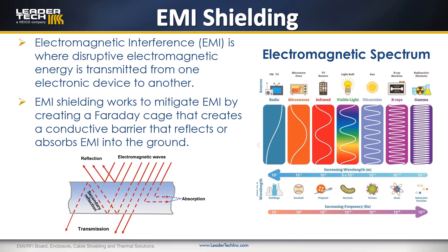If you look at the chart of the electromagnetic spectrum, we're looking at primarily the radio and microwave zone, just below the spectrum of infrared and visible light. The goal of EMI shielding is to mitigate this interference by creating a Faraday cage around the affected component. The total reduction in the signal is a combination of reflection loss within the Faraday cage and absorption loss actually within the material of the shield or cage itself.